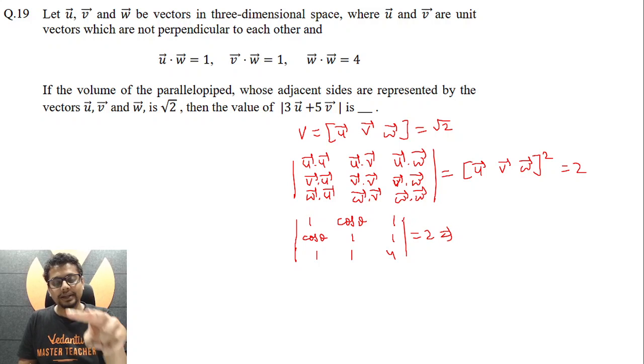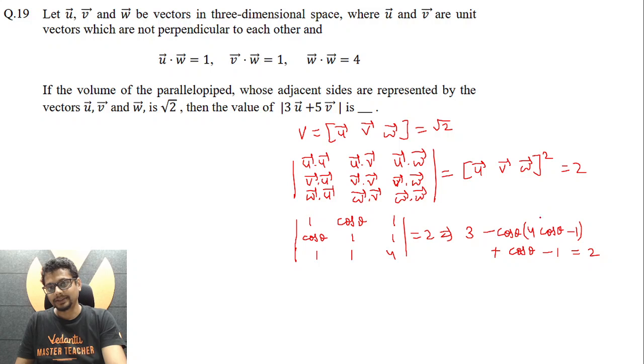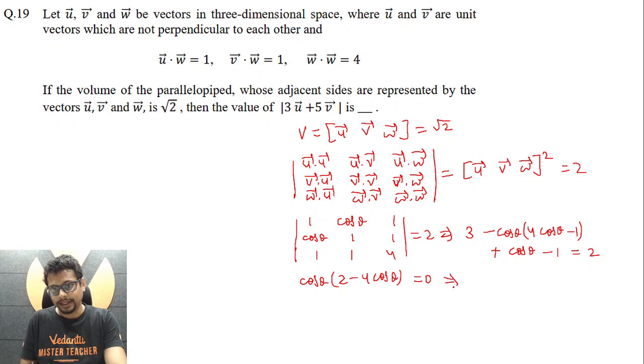Now as we are solving, we have an eye on what we actually want. We want mod of 3u vector plus 5v vector. So if we can get this cos theta, that essentially means angle between these two vectors, we can easily find the value of this expression. So as you expand, we get this equation, and upon further simplification, we get this. So that essentially means, now cos theta can't be zero. Why? Because u vector and v vector are not supposed to be perpendicular. So that essentially means cos theta has to be half.